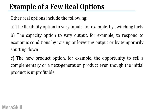Other real options include the flexibility option to vary inputs — for example, by switching fuels — or to vary the output depending on economic conditions. You might plan to make 100,000 units but produce 120,000 or 150,000, or if demand falls, shut down temporarily. There is also the new product option: the opportunity to sell a complementary or next-generation product even though the initial product may be unprofitable. For example, a product may be sold at a loss, but the complementary products will make up for that loss.